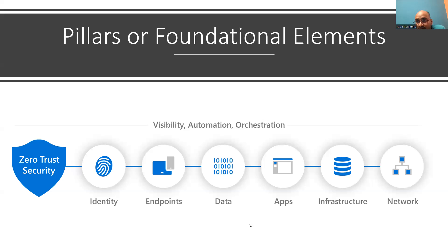Last but not least is the network — the sixth foundational element of Zero Trust. All data is ultimately accessed over network infrastructure, so networking controls provide critical controls to enhance visibility and help prevent attackers from moving laterally across the network. If they compromise one VM, they can move to another and eventually crack the administrator. But with proper controls, lateral movement is blocked. Segment your network — remember, assume breach. With proper segmentation, even if one VM is compromised, it cannot go anywhere else. Deploy real-time threat protection, end-to-end encryption, monitoring, and analytics.